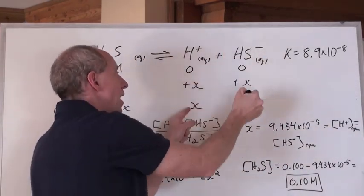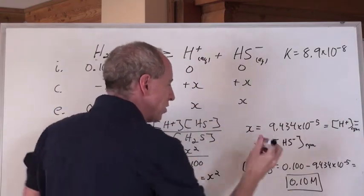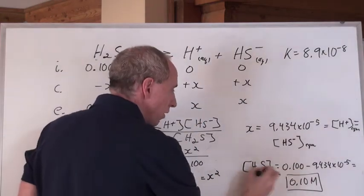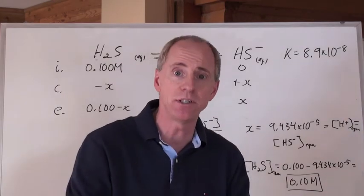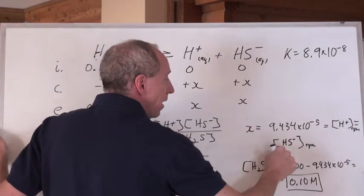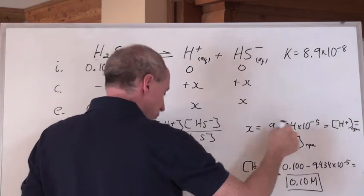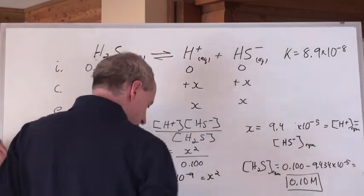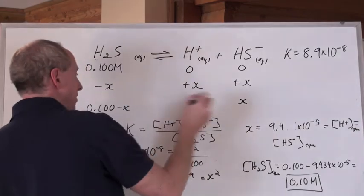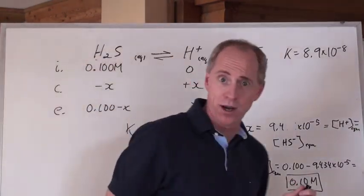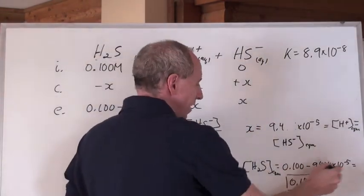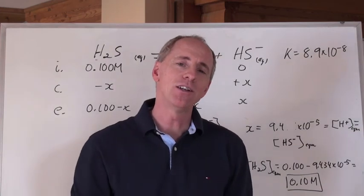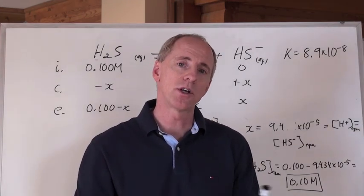That is the concentration of H+ and HS- at equilibrium. Notice the notation: EQN means concentration at equilibrium, and a zero subscript means initially or at time zero. Keeping two significant digits, it's 9.4 times 10 to the negative 5 for both ions. When you subtract that from 0.100, which is at equilibrium, you get essentially 0.10 moles per liter. That's how you do a question where you can disregard X when you add it to or subtract it from a number.